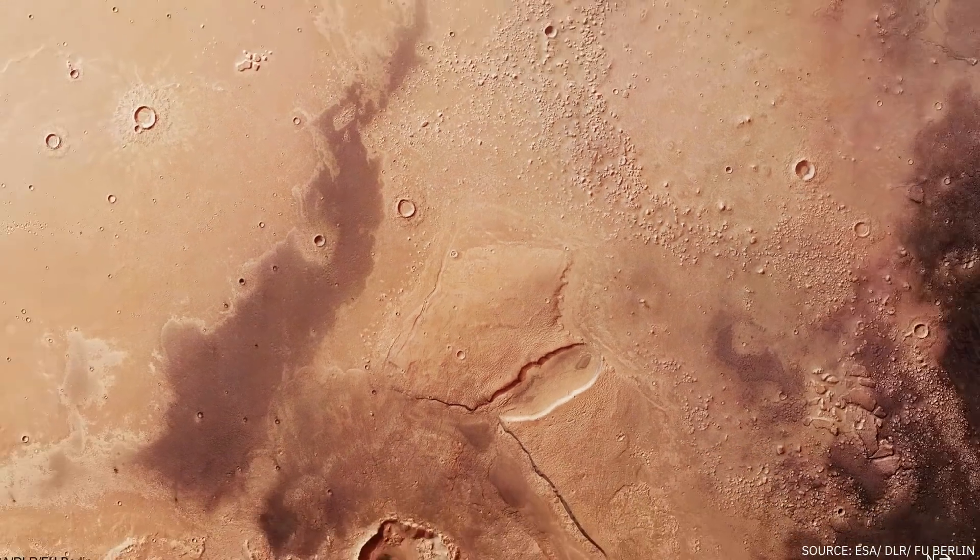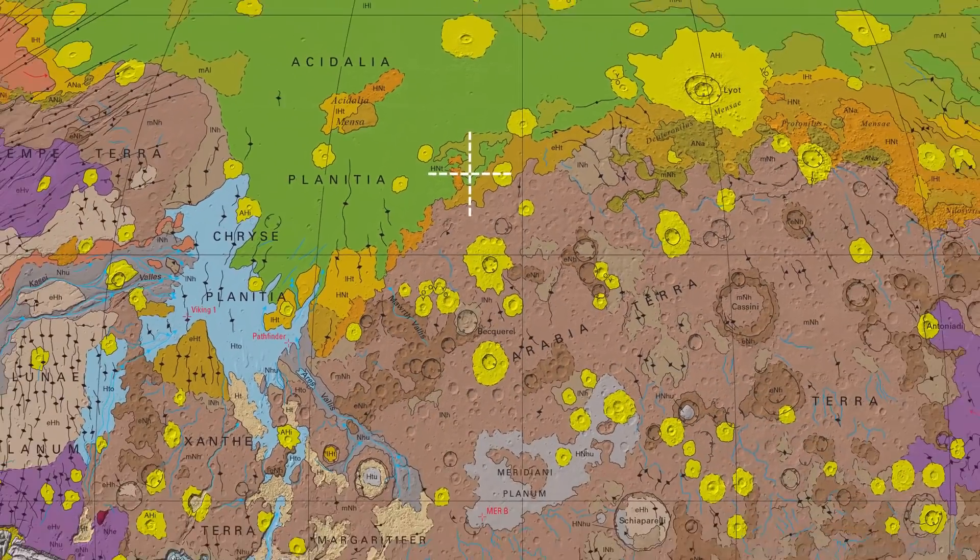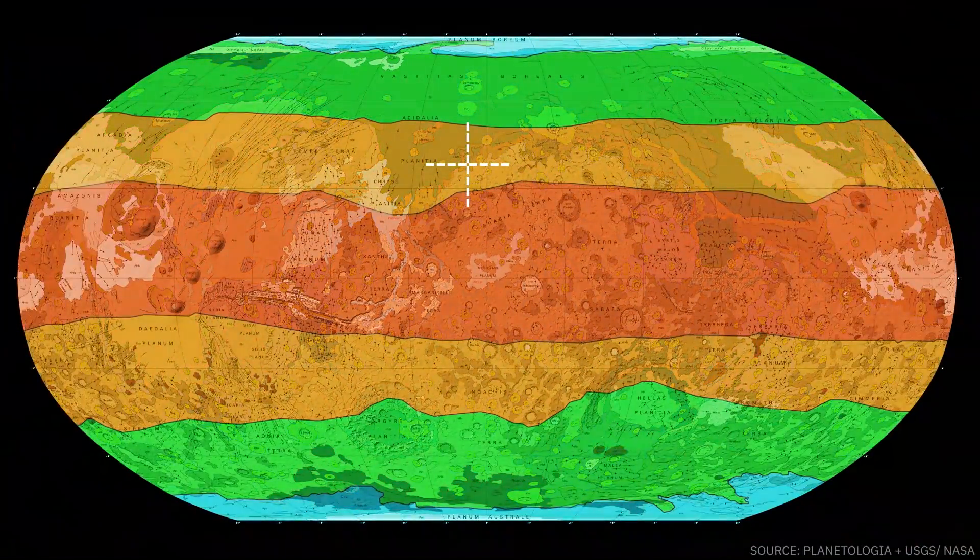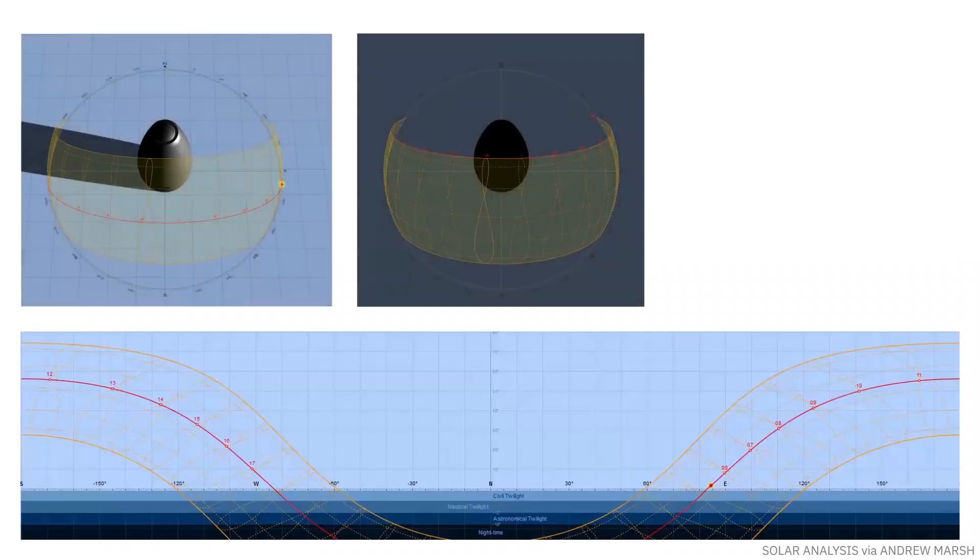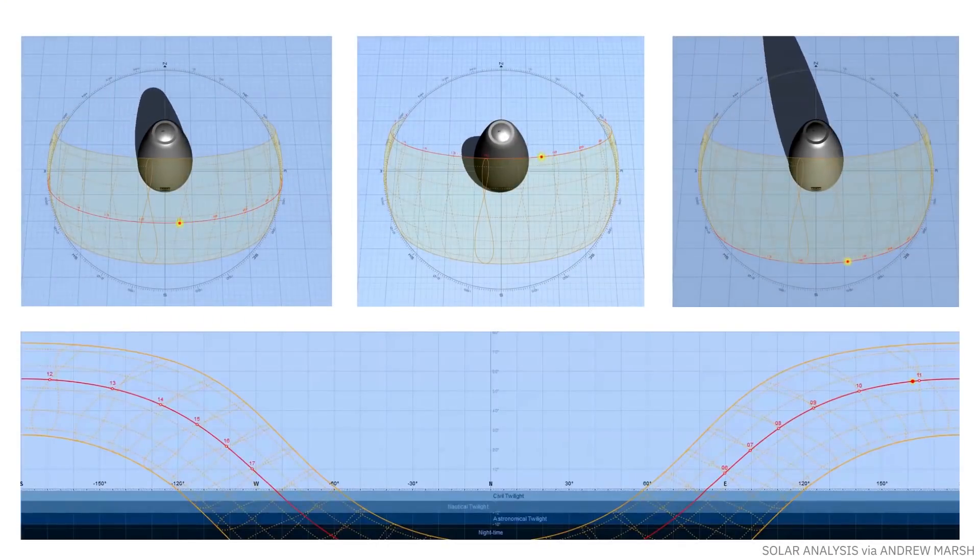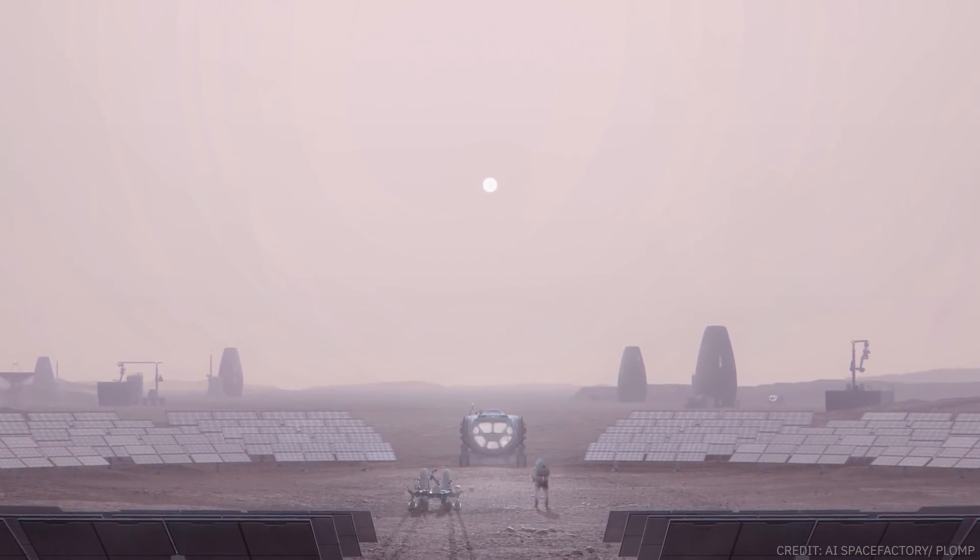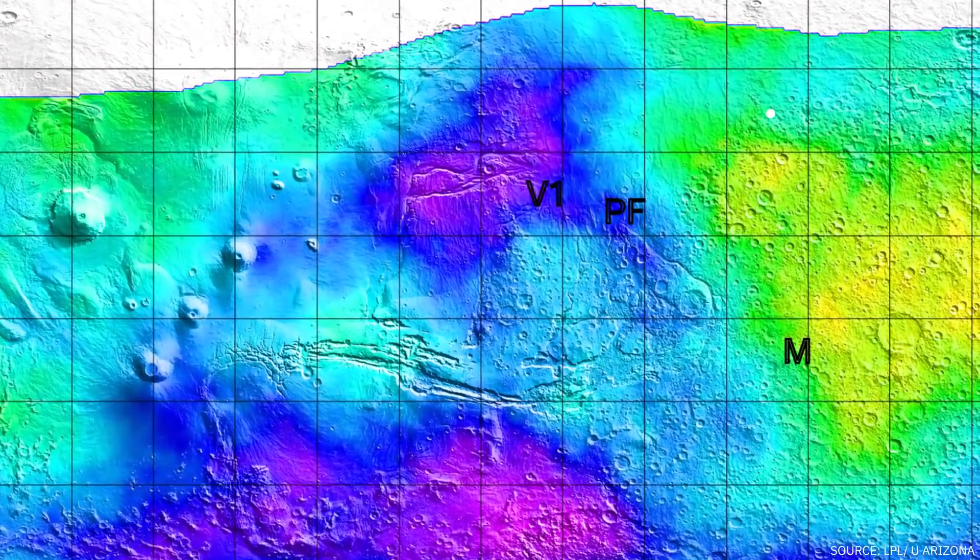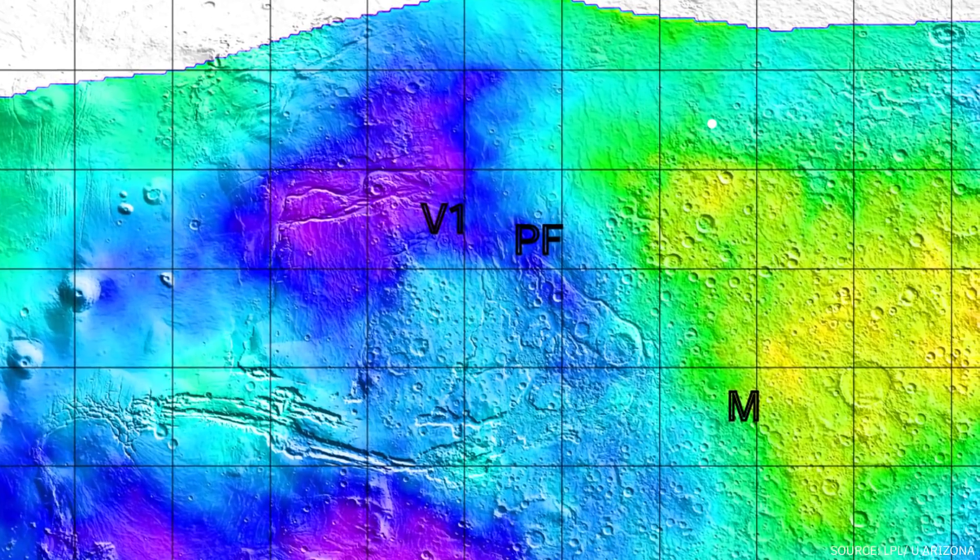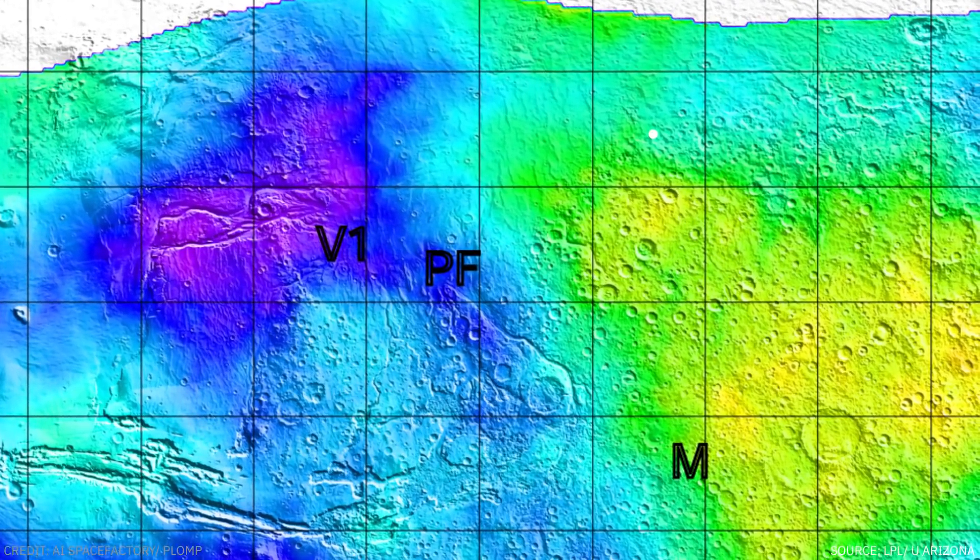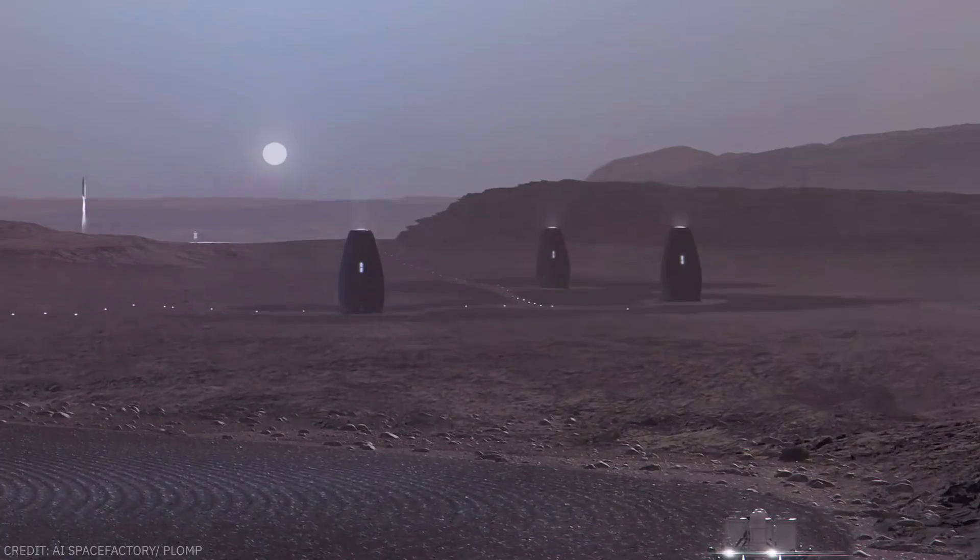Marsha is located in Cydonia Mensae. It sits in the relatively mild north transitional climate zone that has access to year-round sunlight, a measure that promotes psychological well-being and makes solar power viable. At 39 degrees north, it harbors accessible deposits of subsurface ice for conversion to propellant, breathable air, and potable water.